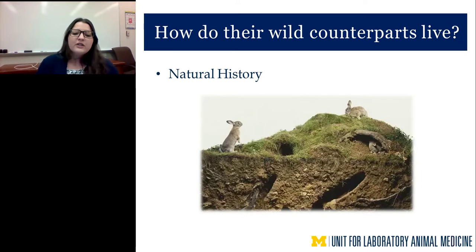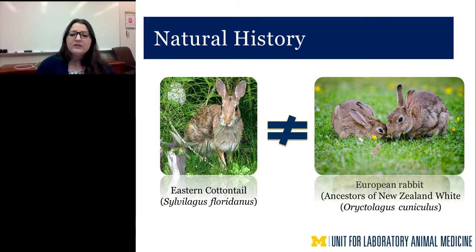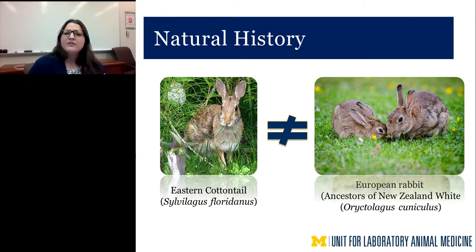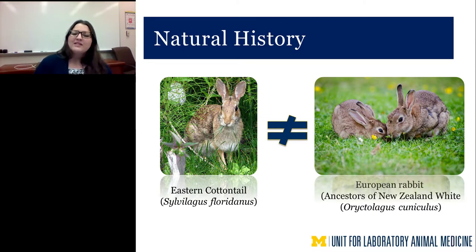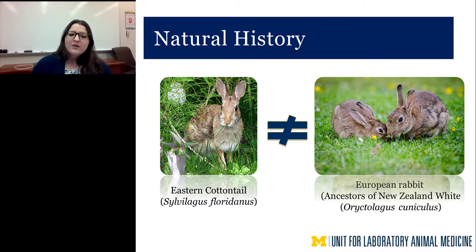To answer the first question of how their wild counterparts live, we look at the natural history of the New Zealand white rabbit. The rabbits most abundant in North America are cottontails — here in Michigan, mostly the Eastern Cottontail, Sylvilagus floridanus. This causes confusion because people ask why we're socially housing laboratory rabbits when the rabbits in their backyard are solitary. The answer is that they are not the same rabbit — the European rabbit is the ancestor of our New Zealand whites, and it is a social species.